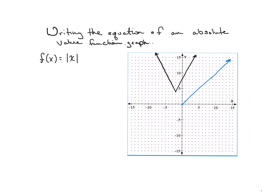Just to reiterate on this one, so you can see what's going on — in blue here, this is what we call the parent function. Essentially, what I'm looking at is how does the new function act versus the old function, and that's how we come up with the new equation. The old function goes basically over 1, up 1, over 2, up 2, and we're going to use that to help us.